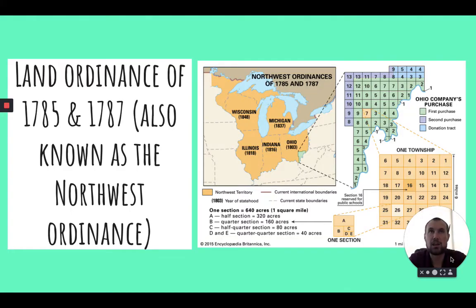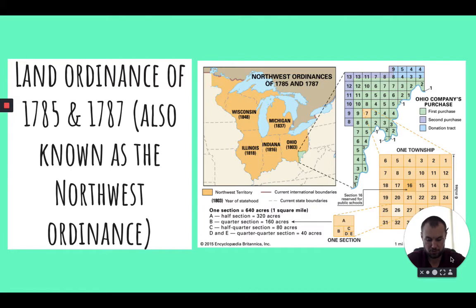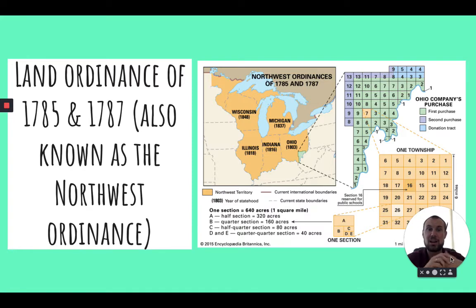The one great thing the Articles of Confederation did was the Land Ordinance of 1785 and the Land Ordinance of 1787, also known as the Northwest Ordinance. It took what we'd consider the Midwest states of Ohio, Indiana, Illinois, Wisconsin, and Michigan, and found ways to sell that land to pay off debt. Each section was broken up into a township — six square miles — divided into 36 sections of one square mile each, with section number 16 designated for public education. Hence, we get big schools like University of Michigan, Ohio State, and University of Wisconsin from the Northwest Ordinance.